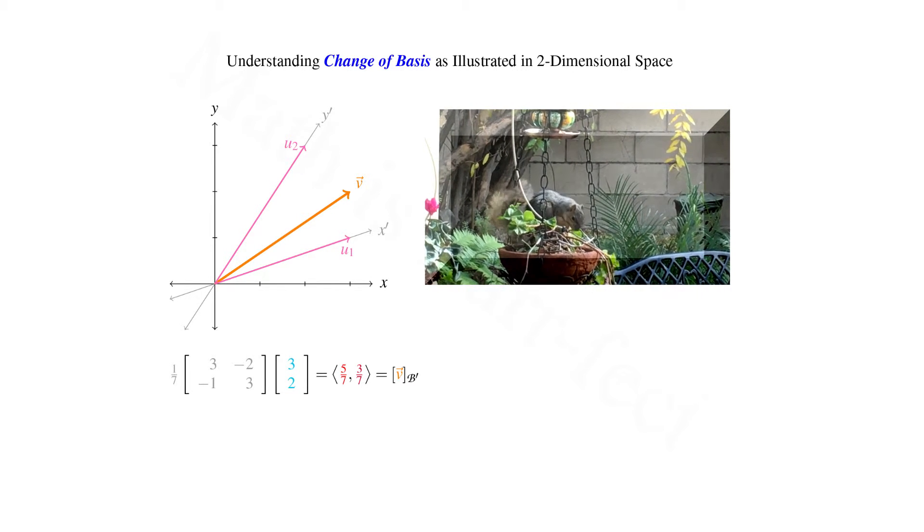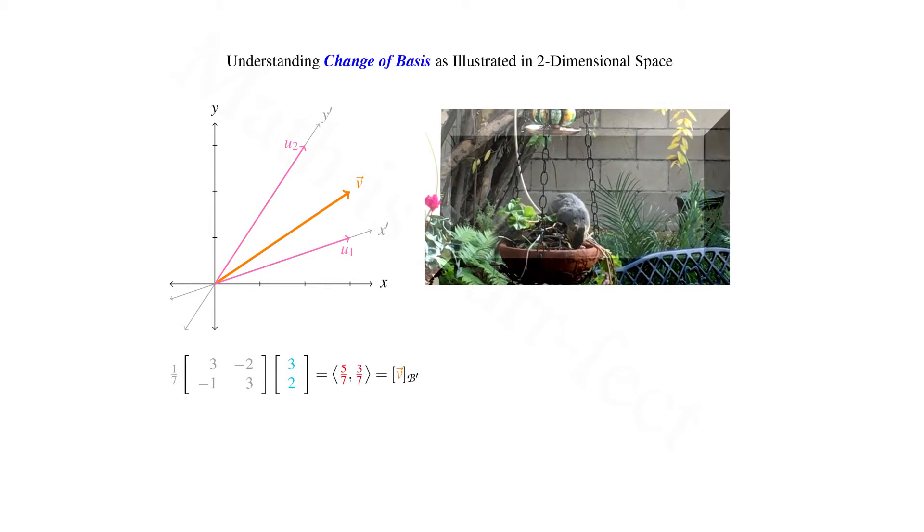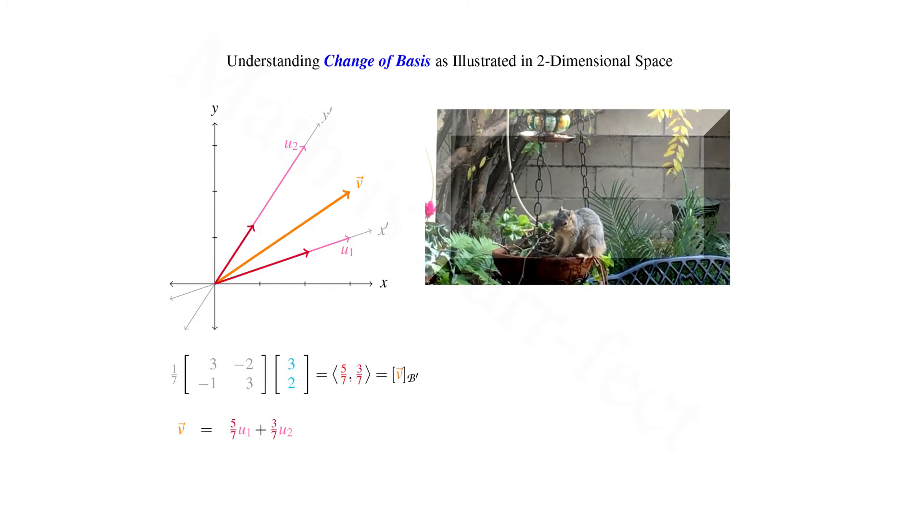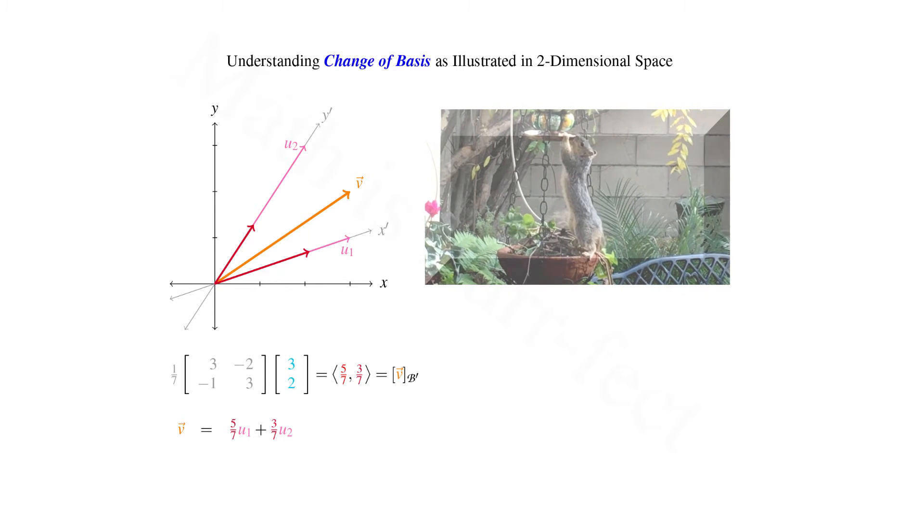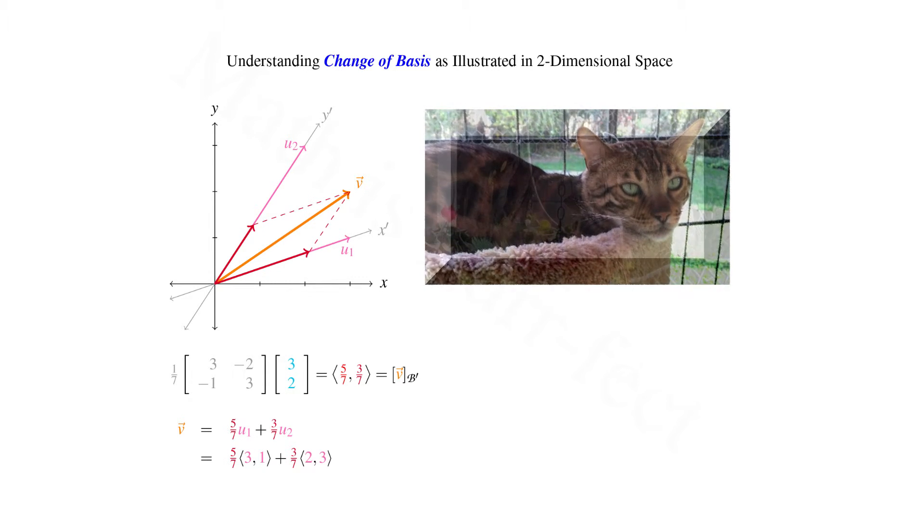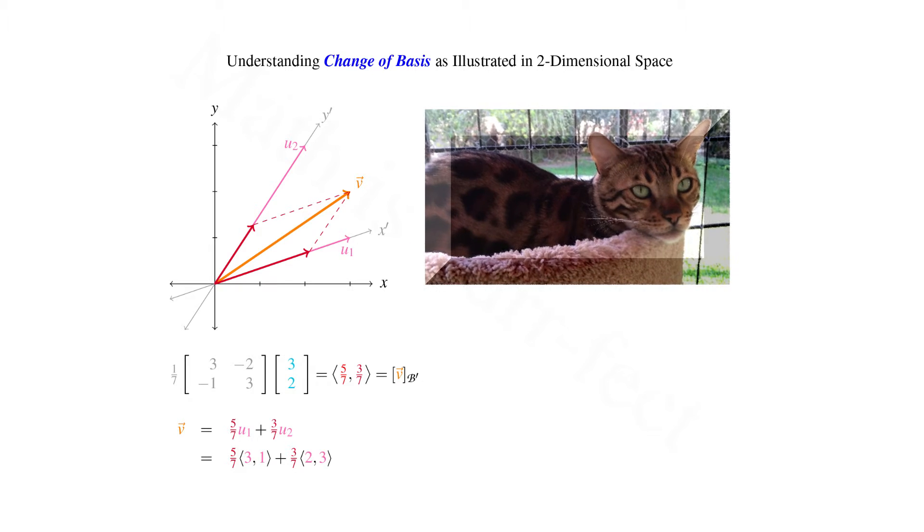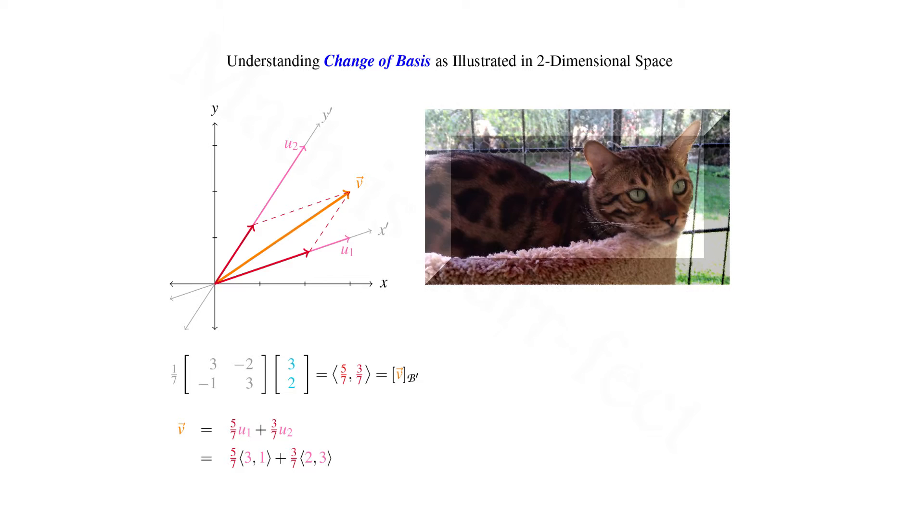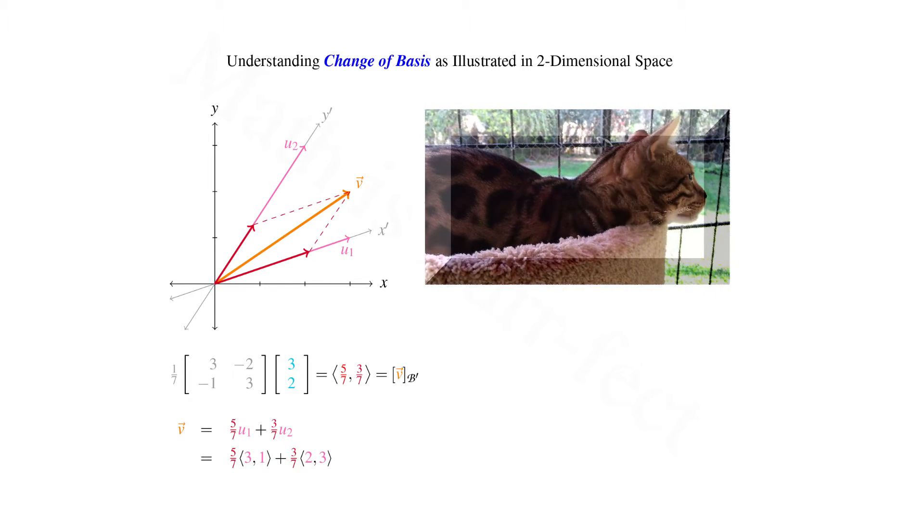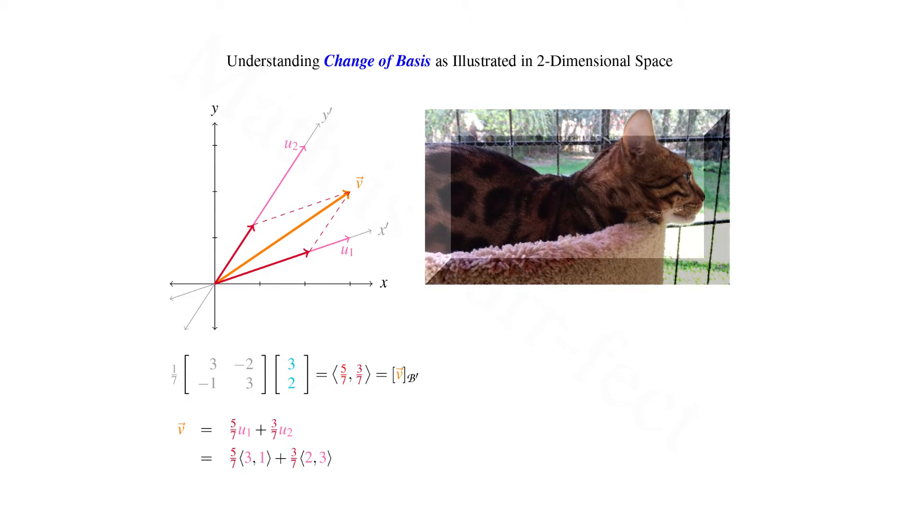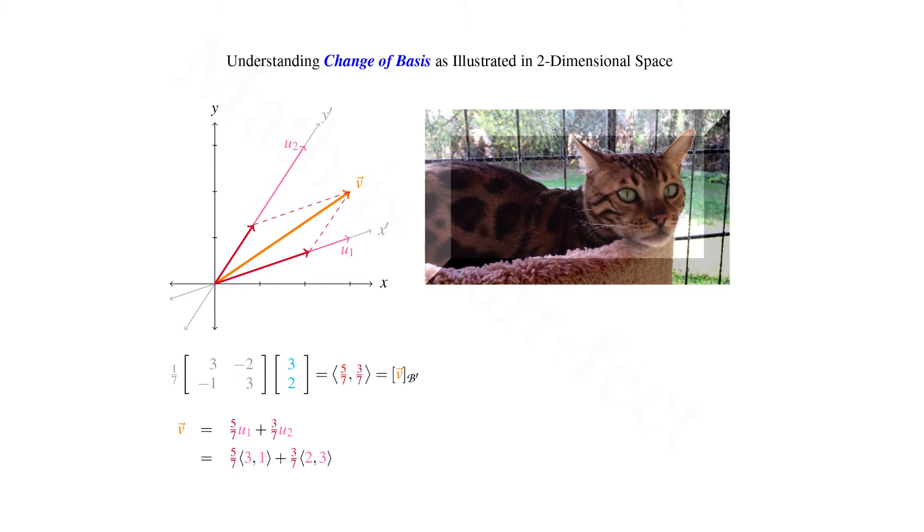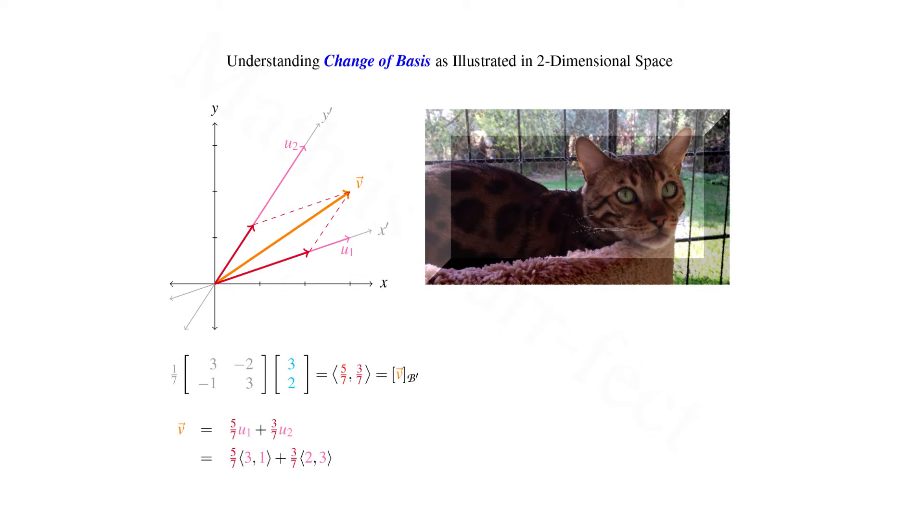So this is the component vector of v with respect to basis b', that is with respect to vectors u1 and u2. Hence v can be written as a linear combination of u1 and u2, namely 5 sevenths the vector 3 comma 1 plus 3 sevenths the vector 2 comma 3, which graphically means we go out to a length of 5 sevenths the vector u1 and add to that a length of 3 sevenths the vector u2 in the direction of u2, tip to tail method, in order to arrive at vector v in two space.